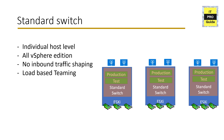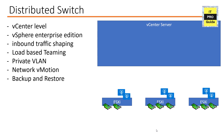Features not available on standard switch include inbound traffic shaping and load-based teaming. The major differences between a standard switch and a distributed switch are centralized management, load balancing, and private VLAN support. A distributed switch is configured and managed from vCenter, available from vCenter Enterprise Edition onwards, and provides inbound and outbound traffic shaping, load-based teaming, private VLAN, network vMotion, and backup and restore of the distributed vSwitch configuration.